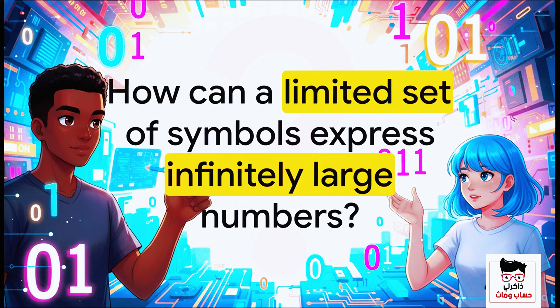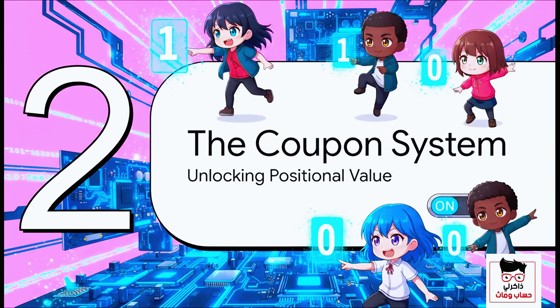This brings up a really fascinating question. If any system — whether it's got 10 symbols or 60 — is working with a limited set of characters, how on earth can it express a number like 1,973, or a million, or a trillion? The answer lies in this incredibly simple but really powerful idea. To really get our heads around this, we're going to use a simple analogy. Let's forget about numbers for just a second and imagine we're collecting and trading coupons at a store.